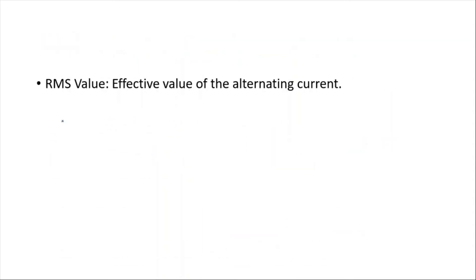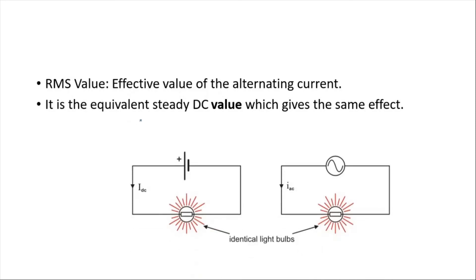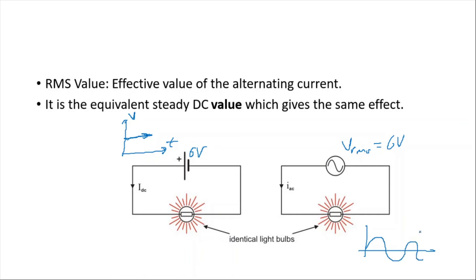What is the RMS value? RMS is the effective value of the alternating current. For example, if we have two identical light bulbs — one connected to DC, one to AC — and they have equal brightness, then if the DC source is 6 volts, the V_RMS of the AC source is also 6 volts. The RMS value is the equivalent steady DC value that gives the same effect.